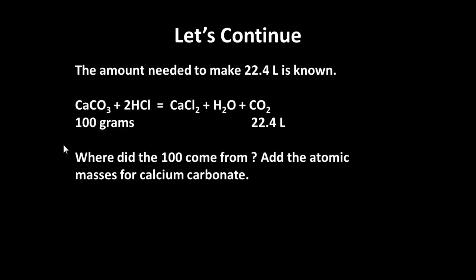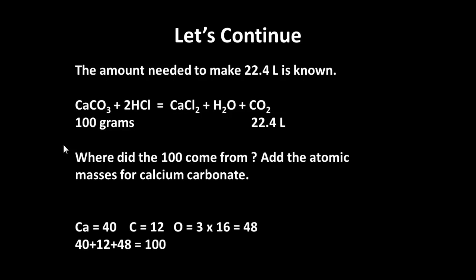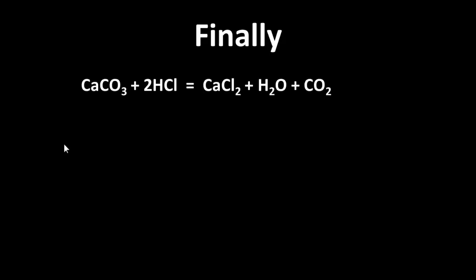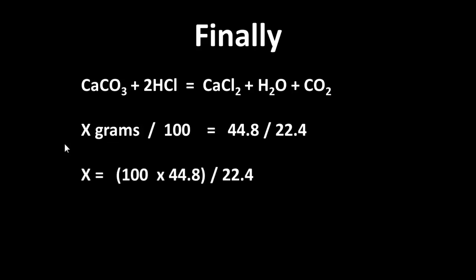The 100 comes from adding the atomic masses for calcium carbonate: calcium is 40, carbon is 12, and there are three lots of oxygen at 16, so 40 plus 12 plus 48 equals 100. So x grams over 100 equals 44.8 divided by 22.4. Solving for x: x is 100 times 44.8 divided by 22.4, which is 200 grams.